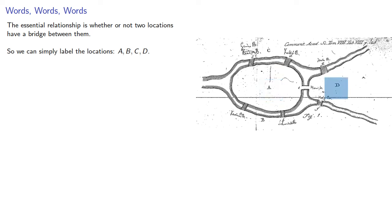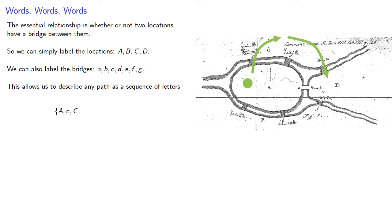We can also label the bridges with lowercase letters a through g. This allows us to describe any path as a sequence of letters representing the locations and bridges. So we might start at A, cross bridge c to C, cross bridge g to D, cross bridge f to B, cross bridge a back to A, and so on.